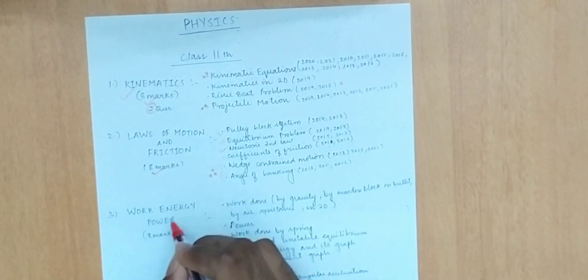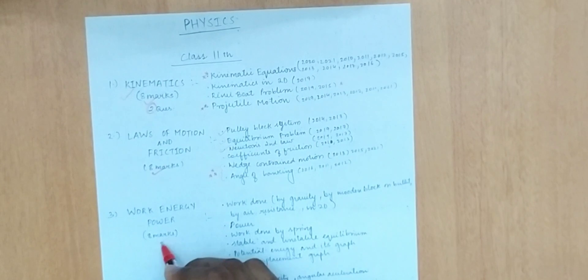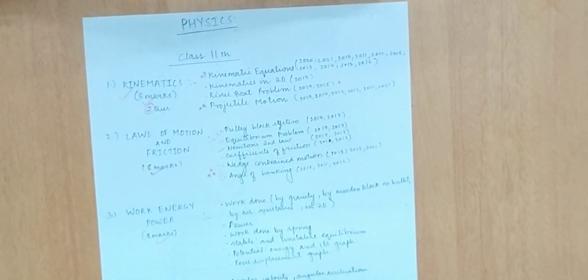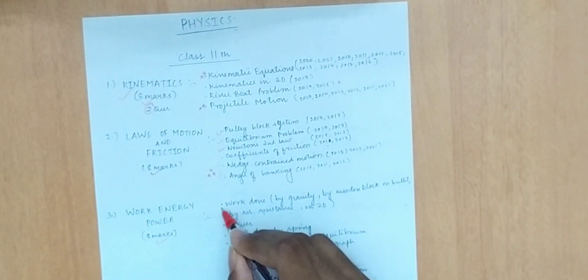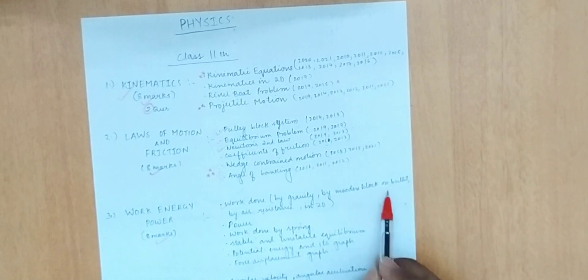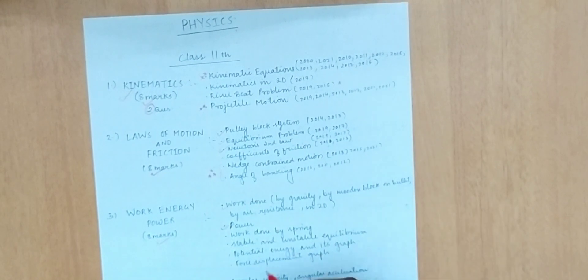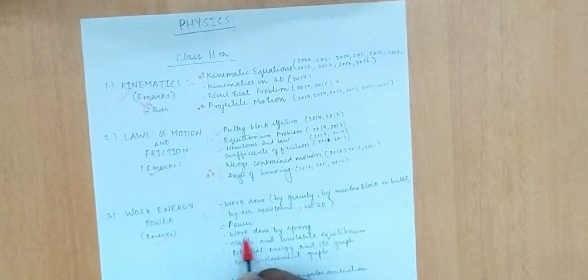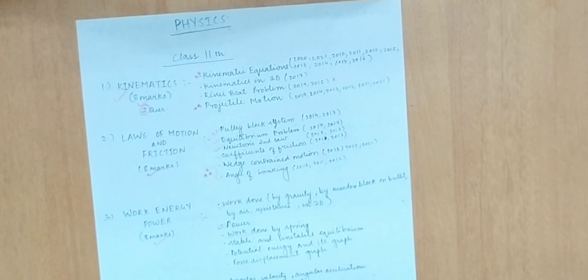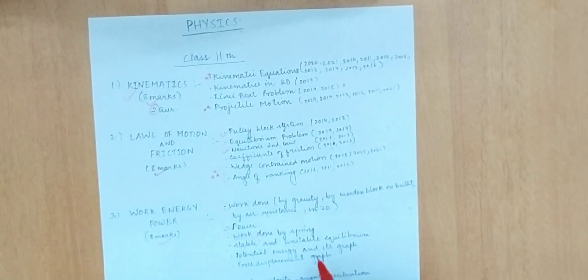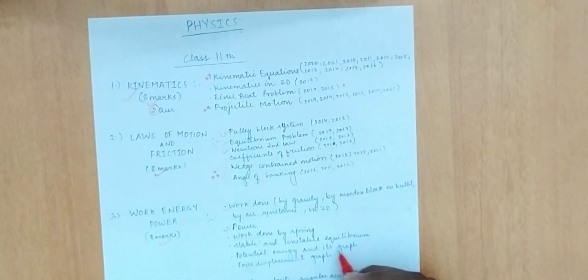Now we are going to cover Work, Energy, and Power. Key topics include work done by gravity, wooden block on bullet, air resistance, and power. Work done is a very important topic. Stable and unstable equilibrium, potential energy and its graph, and force-displacement graph are also important.